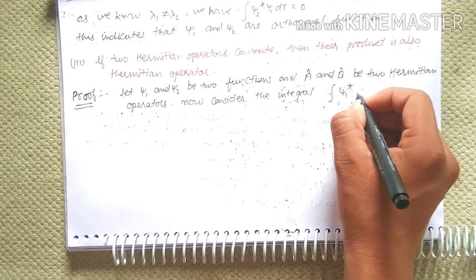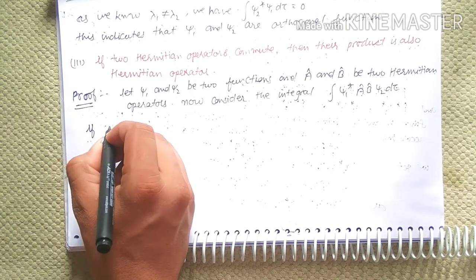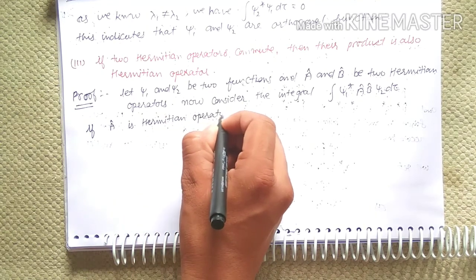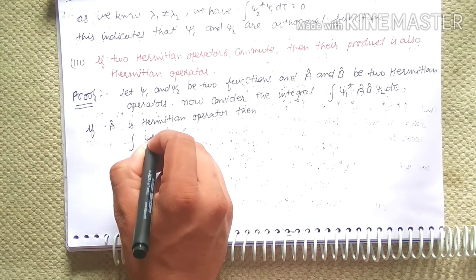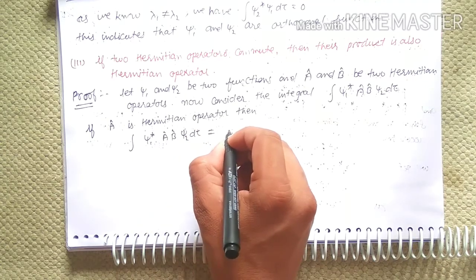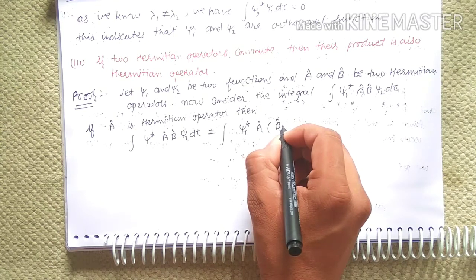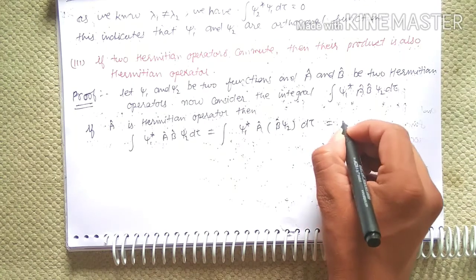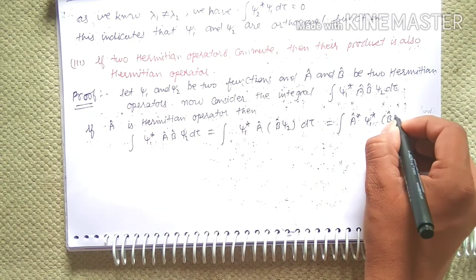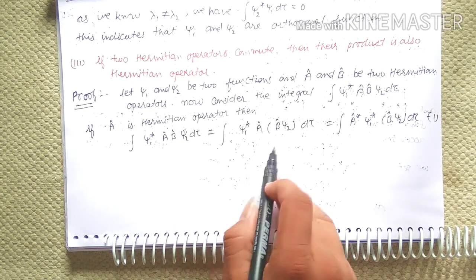Now consider the integral: integration of chi-1* A-hat B-hat chi-2 d-tau. Since A-hat is a Hermitian operator, integration of chi-1* A-hat (B-hat chi-2) d-tau equals integration of (A-hat* chi-1*) B-hat chi-2 d-tau, equation one, by applying the definition of the Hermitian operator.